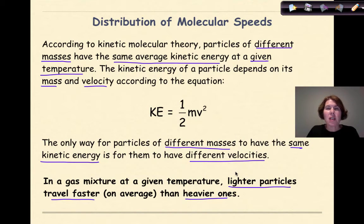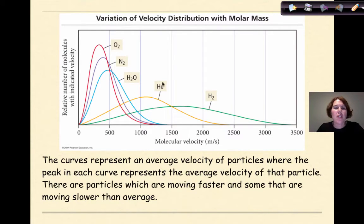They're all going to be at the same temperature because they have the same kinetic energy, but lighter particles are going to move faster, while heavier particles are going to move slower. One way that we can look at these different velocities is looking at this diagram, which gives variation of velocity distributions with molar mass. These curves represent average velocity of particles, where the peak in each curve represents the average velocity of that particular particle. There are particles which are moving faster and some that are moving slower than average. Here's diatomic oxygen, which will have an average atomic mass of 32, and nitrogen is 28, and water is 18, helium is going to be 4, and hydrogen is going to be 2.